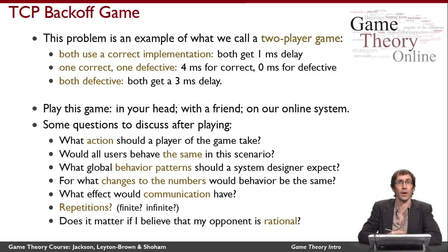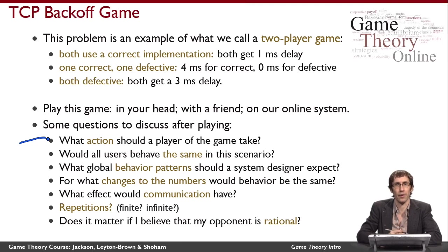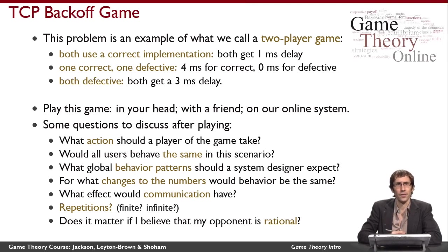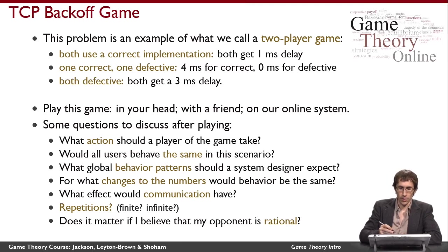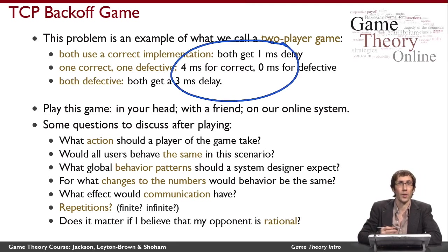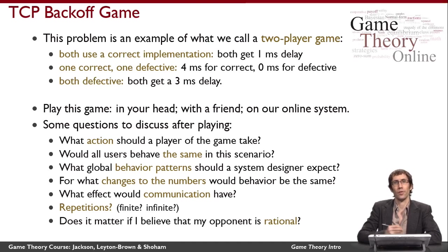I'd like to invite you to think about some more abstract and philosophical questions that we'll address throughout this course. First, do you think all users should be expected to behave the same in a situation like this? If you're someone who cares about how the whole system works from the outside — for example, the designer of the network — what kinds of global patterns of behavior would you expect to see emerge? Also, these numbers I came up with are a little arbitrary. How much do the predictions we can make about how the game should be played depend on those numbers? Would slightly different numbers lead to very different behavior?